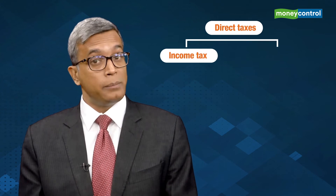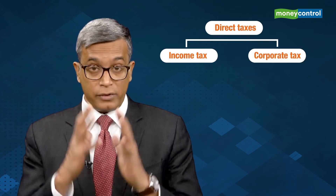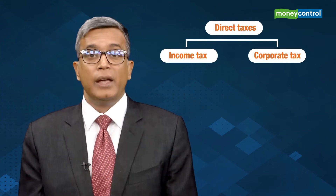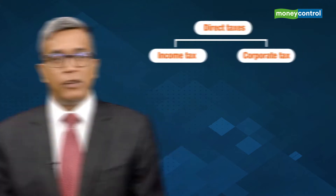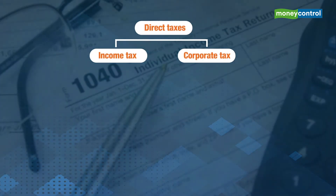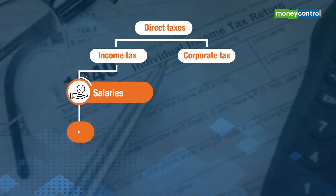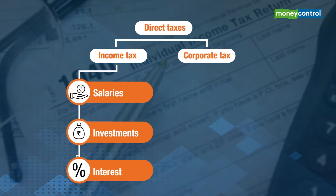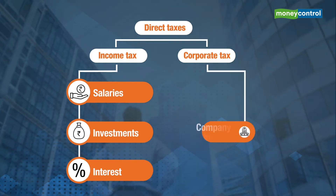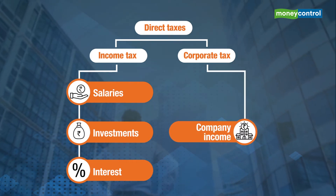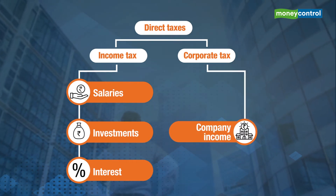Direct taxes are the ones that fall directly on individuals and corporations. Personal income tax and corporate tax are the main heads of direct tax. Income tax is levied on individual income from various sources, such as salaries, investments, interests, etc. Corporate tax is tax paid by companies or firms on incomes they earn.